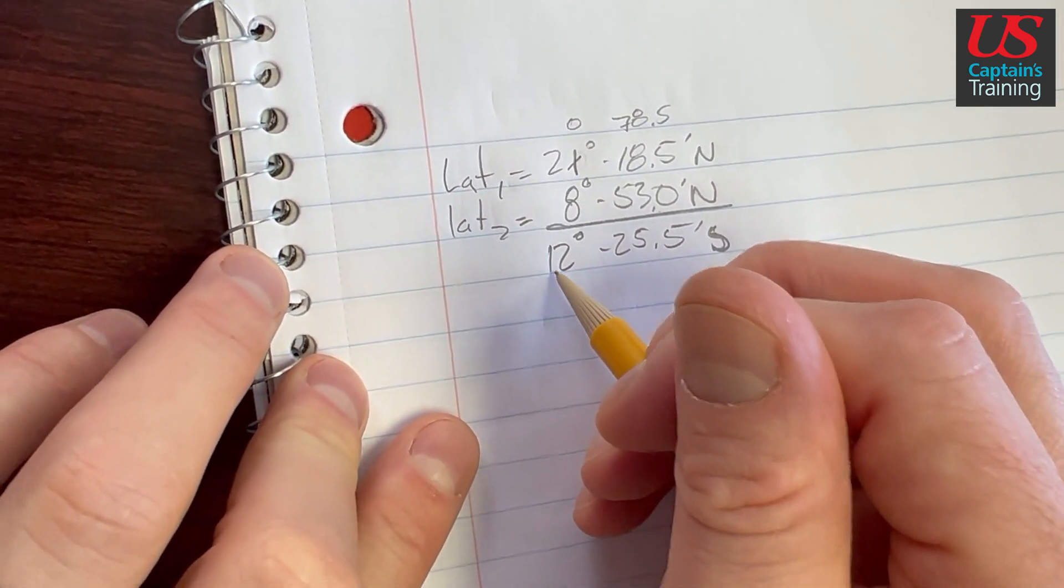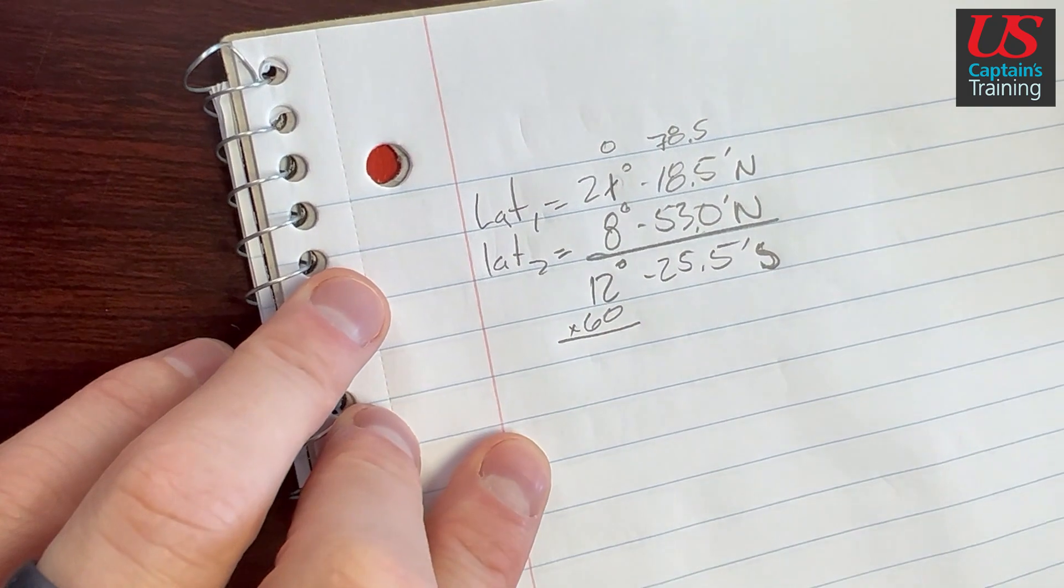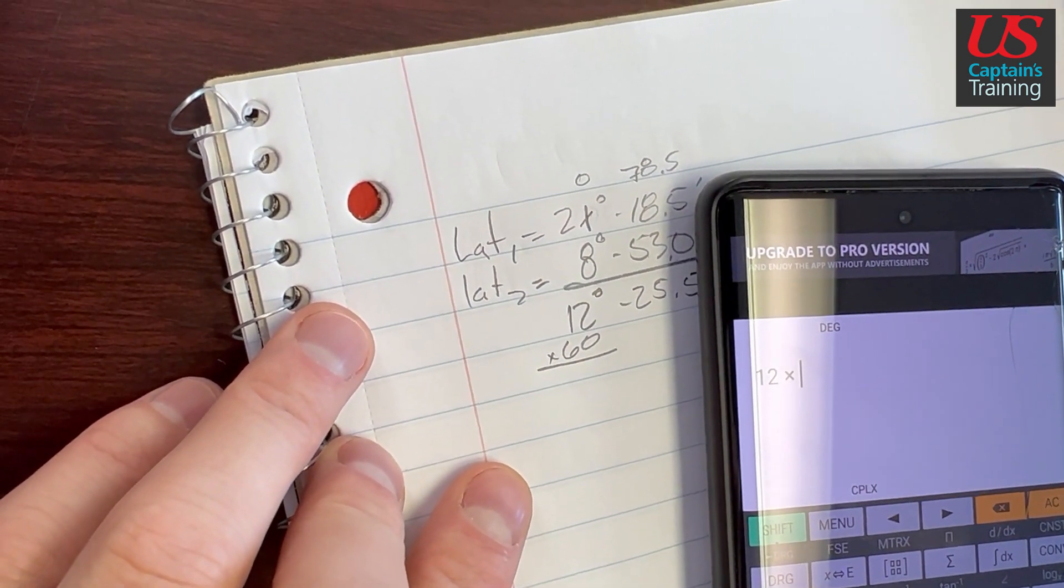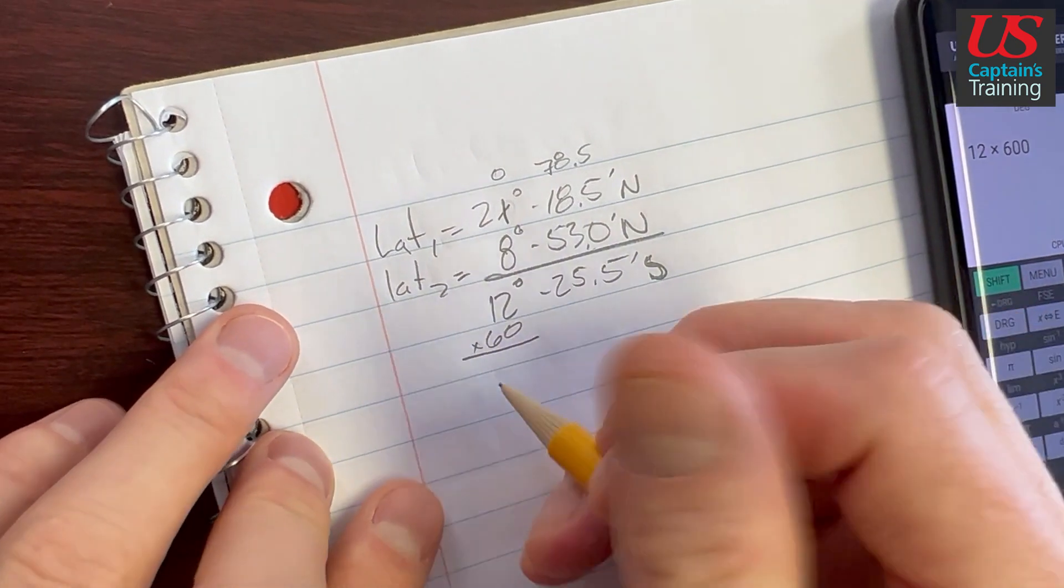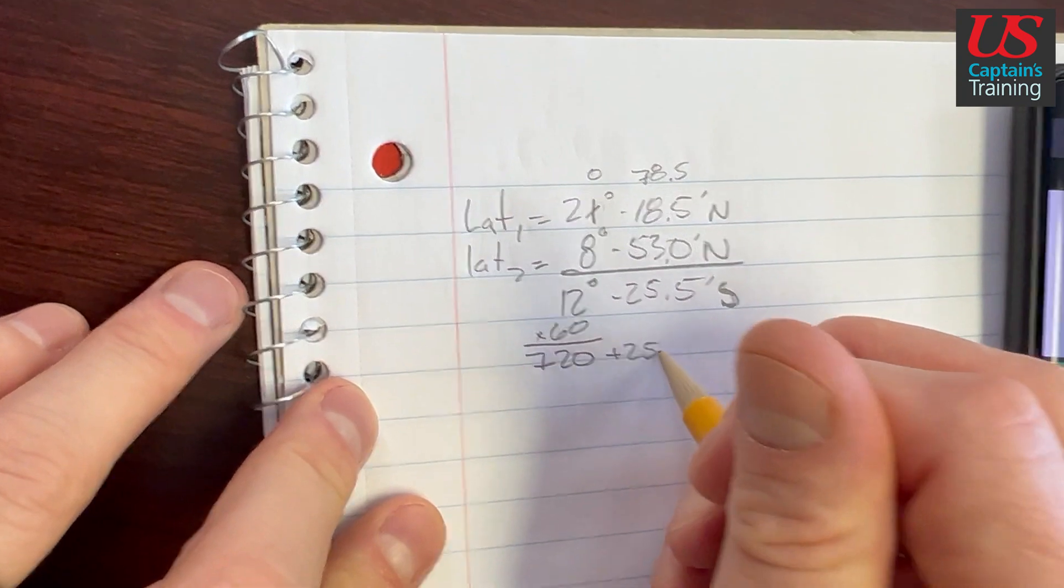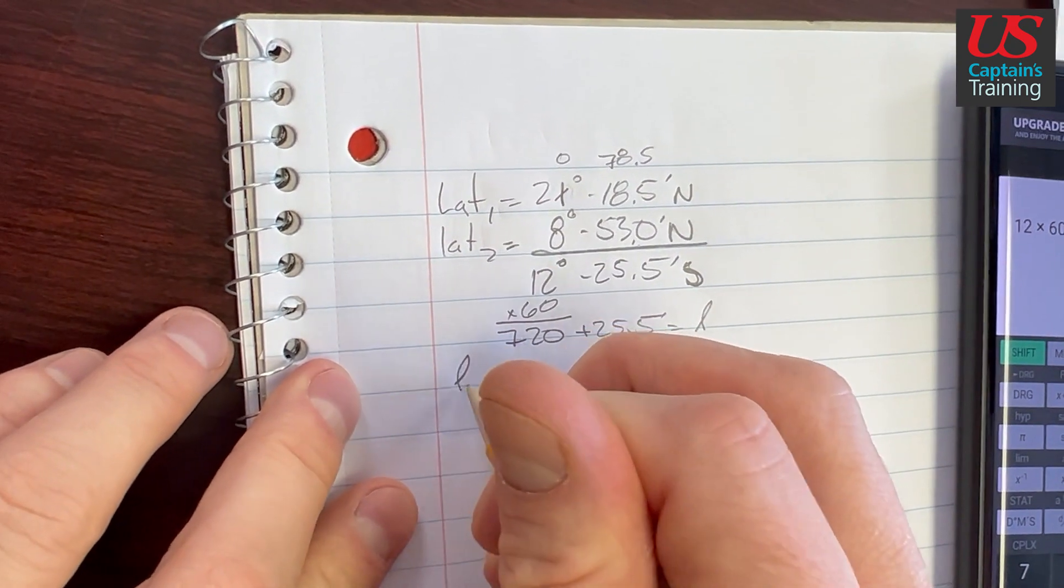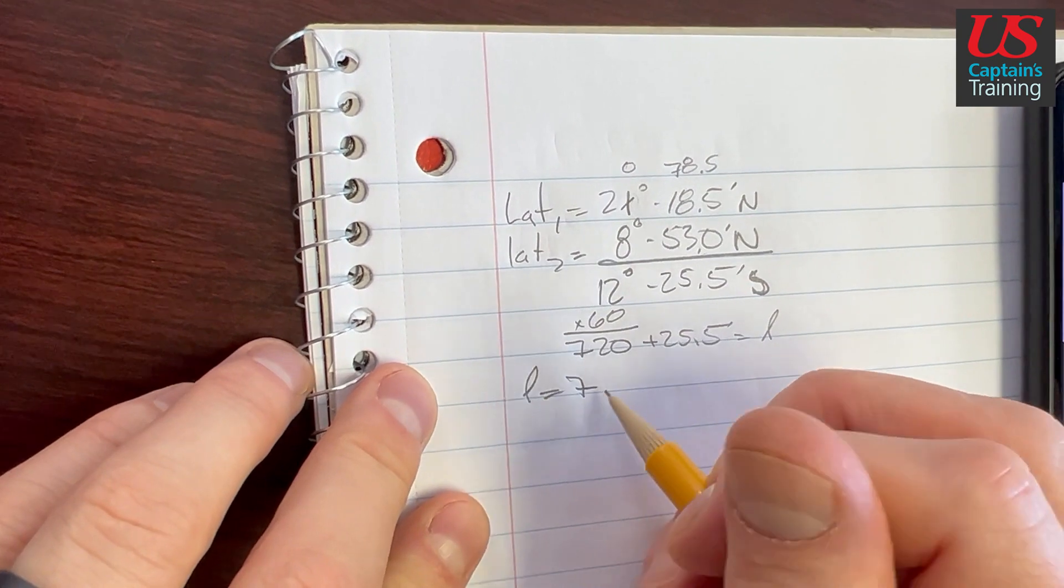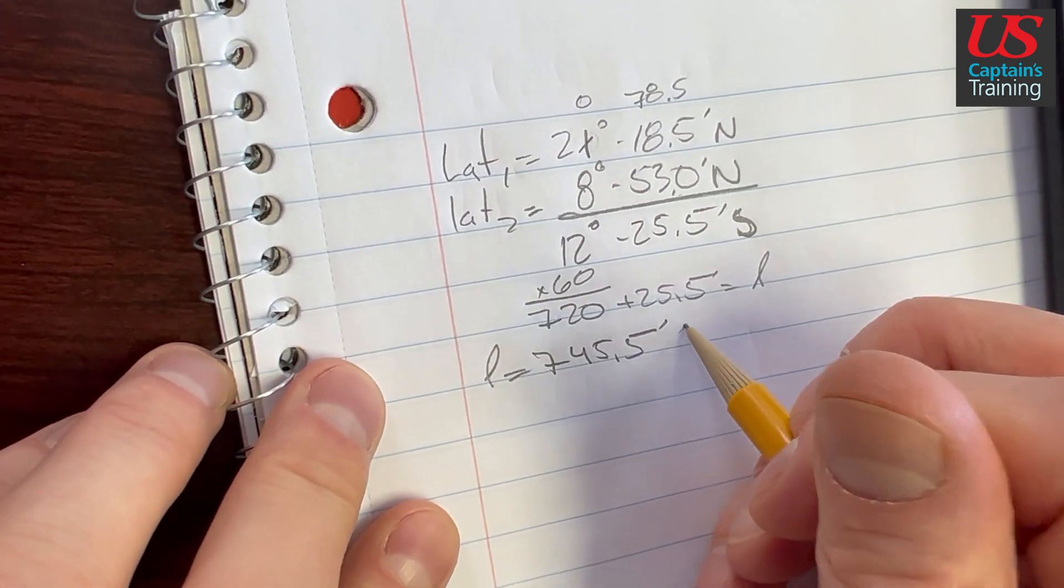And now we're going to turn these degrees into minutes as well, so we'll times it by 60. And 12 times 60 is 720, 720, and then we'll add 25.5 minutes. And this will give us L. So L is equal to 745.5 minutes south.